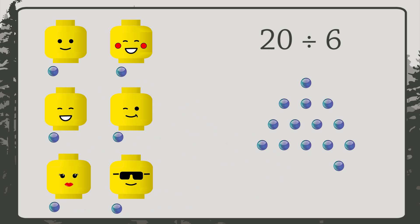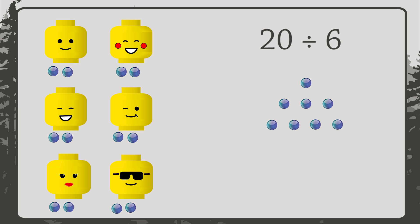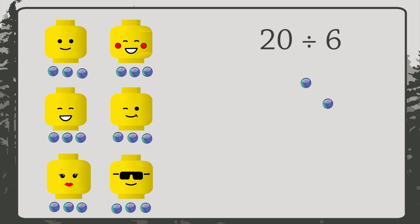One, two, three. Okay, we have a problem. There are two marbles left, but there are six people. We want to be fair, so we can't give some friends more than others. The best way to handle this is to stop here. We don't want to lose any friends.